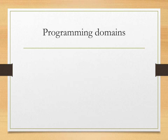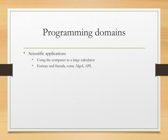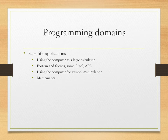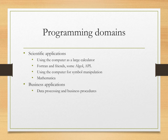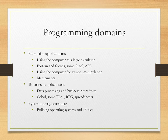Now let's get into the different domains of programming. The first application is scientific — potentially using the computer as just a large calculator. For this purpose, you might see the language Fortran and its relatives, maybe a little bit of ALGOL or APL. Using the computer for symbol manipulation is also another thing, especially when making more complicated scientific formulas, and Mathematica is a big application you'll see. The next application is that of business — data processing and business procedures — and some languages you might see are COBOL, PL/1, RPG, and some spreadsheets.